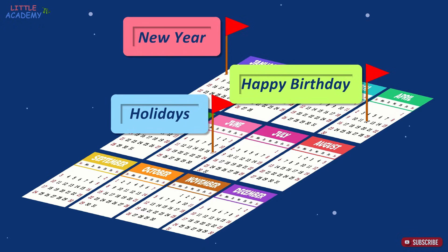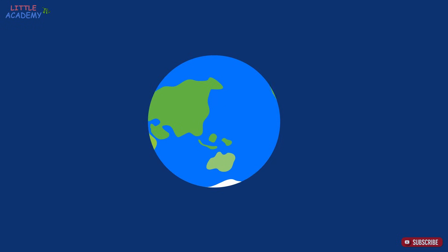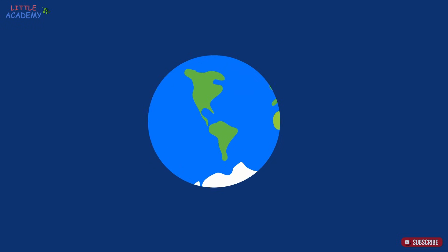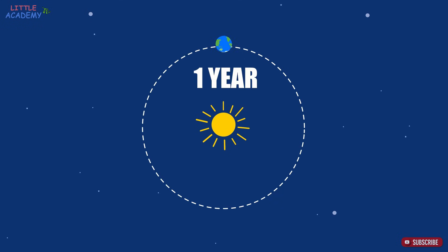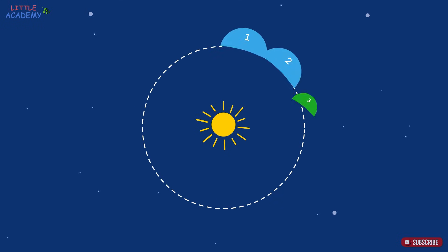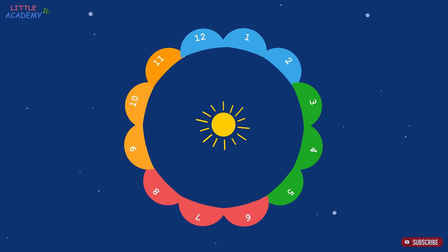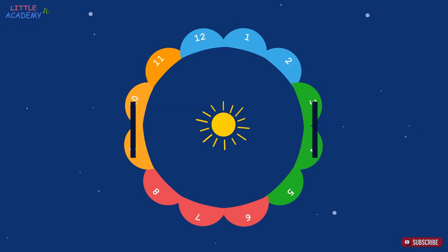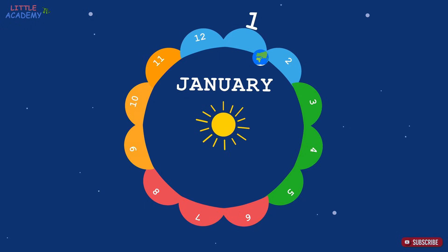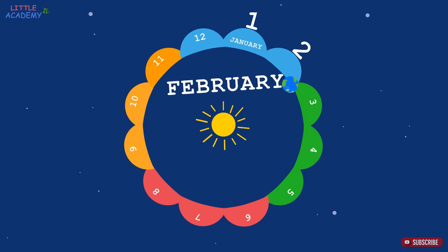This is our planet Earth, on which we live. It revolves around the Sun. One revolution of the Earth around the Sun is one year. A year is split into 12 parts which we call months. So one year is 12 months. A year starts with January, so the first month of the year is January. The second month is February.